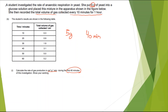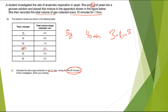I need centimetres cubed, which is the only unit left to find. I need to look at my table for this. For the first 40 minutes, looking up to the 40th minute, the total volume of gas collected is 3.1 centimetres cubed. So I can write that down: 3.1 centimetres cubed.